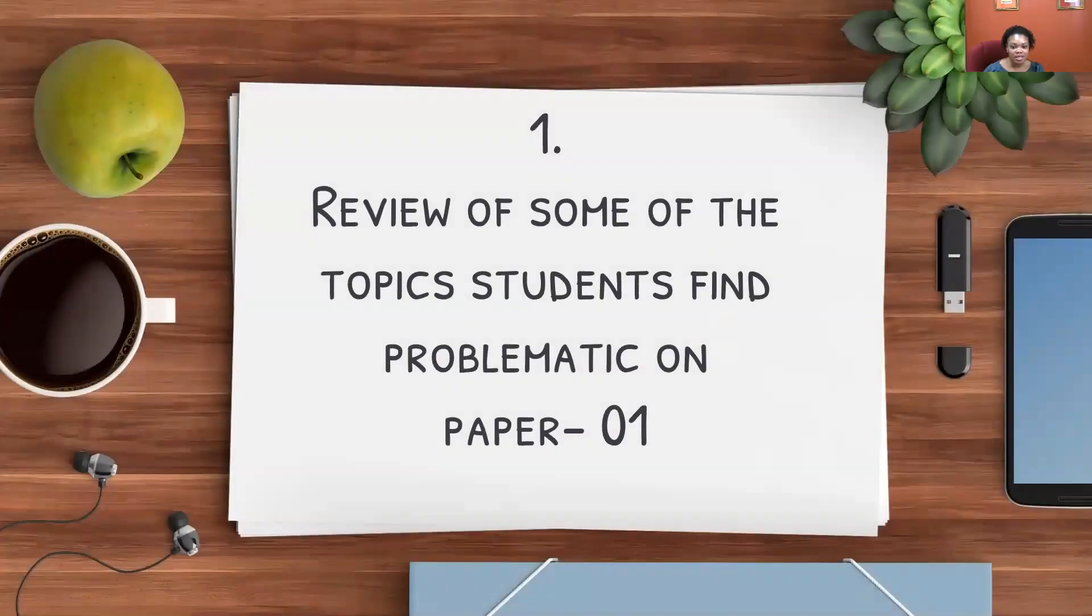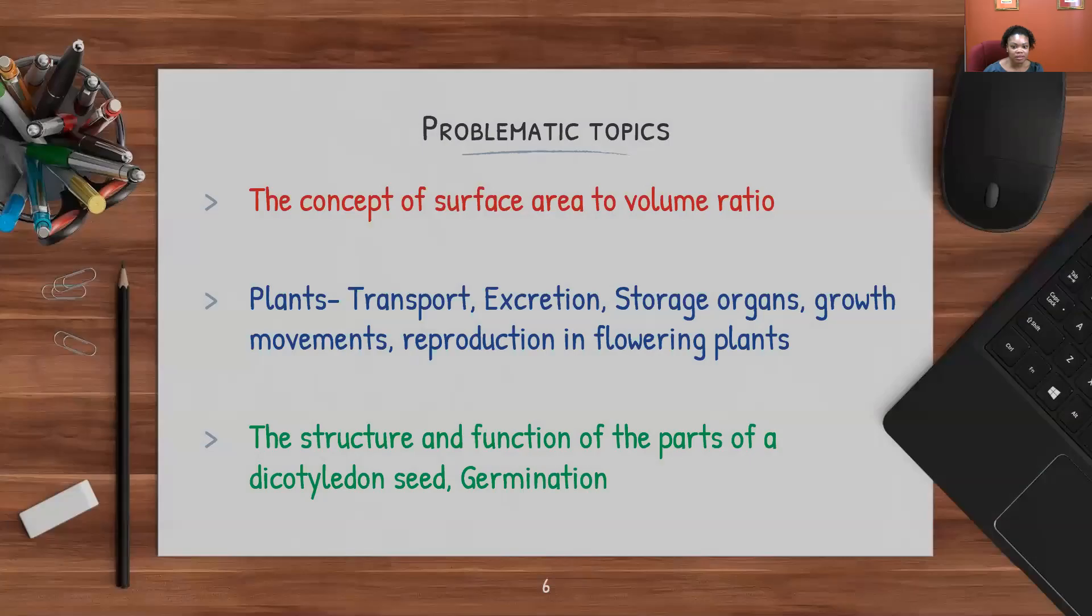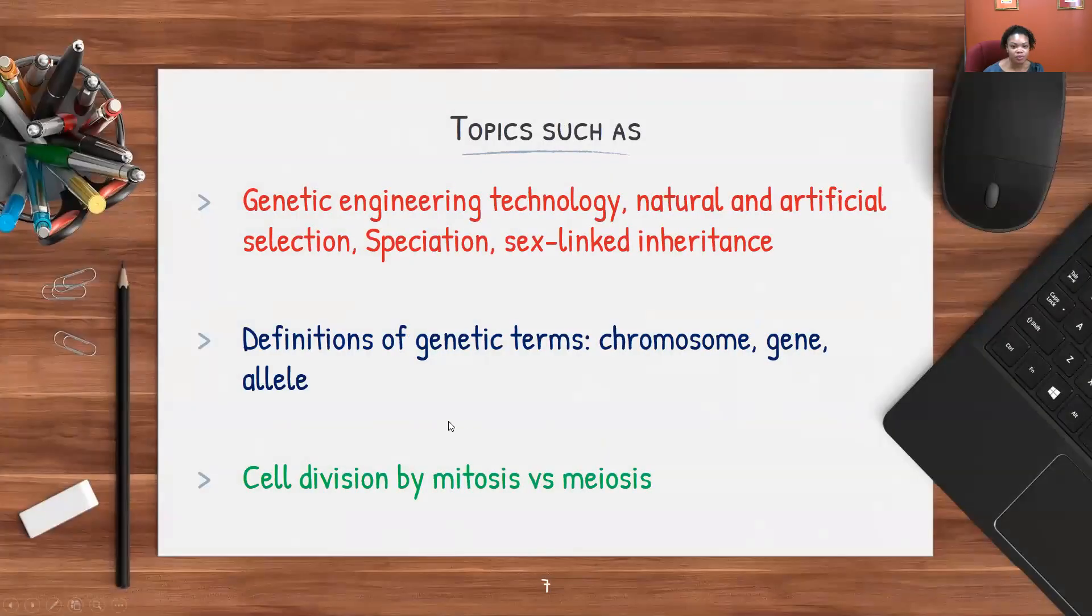Let's review some of the topics that you find problematic on paper one. Starting with the concept of surface area to volume ratio, plants transport, excretion, storage organs, growth movements, reproduction in plants. When it comes to plants, it's always an area that I find students struggle because they can't relate as much as they would to animals and human structures. We'll also look at the structure and parts of seed or germination, phototropism, and genetic engineering, which is usually towards the end of the syllabus and not covered in as much depth.